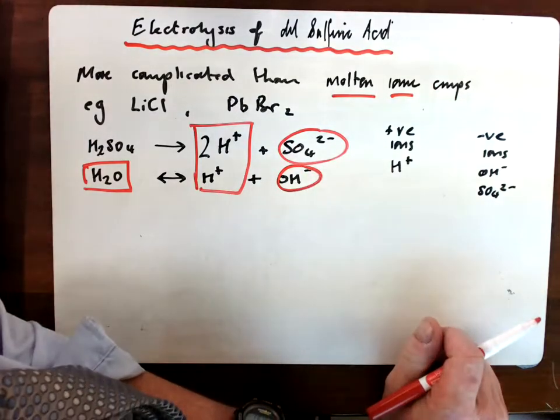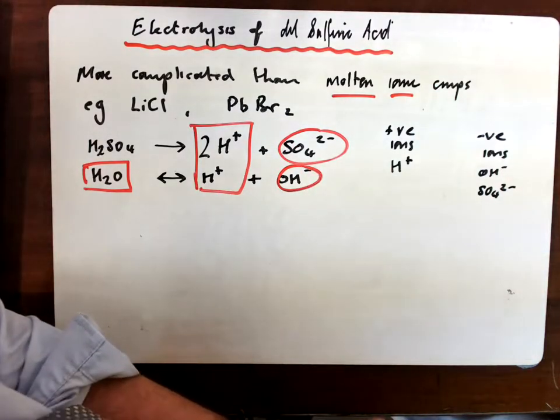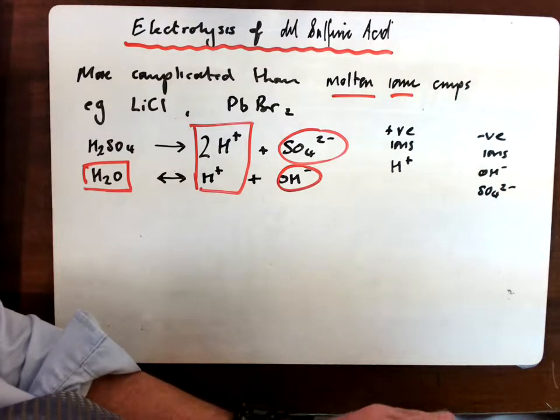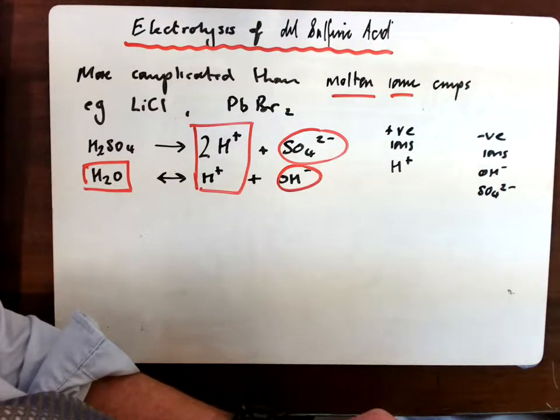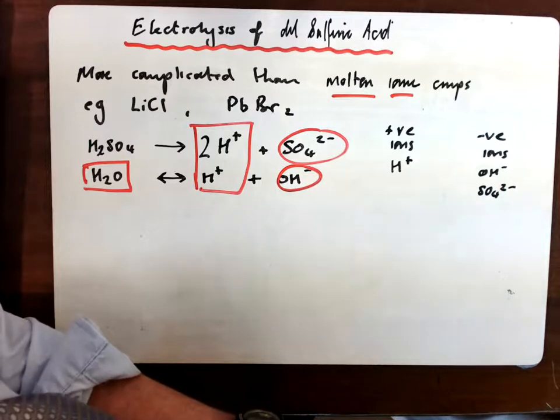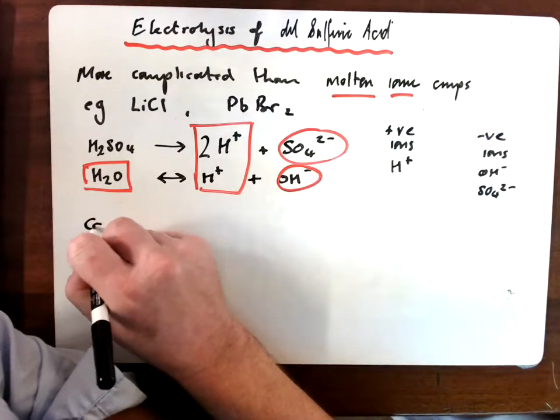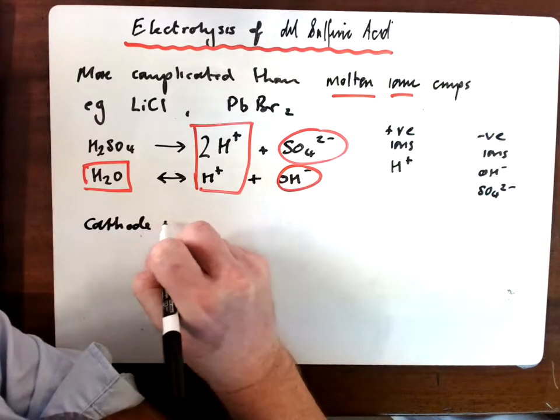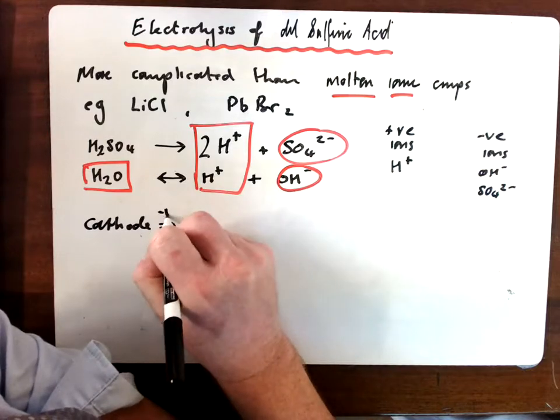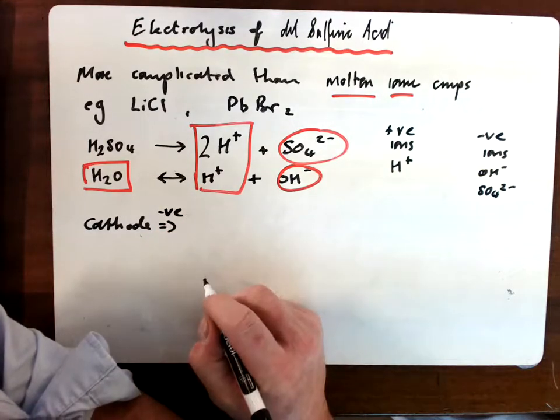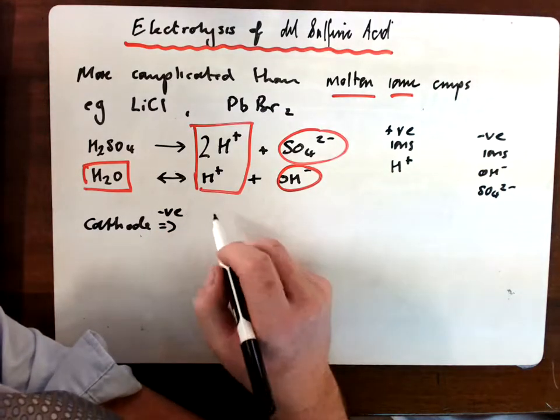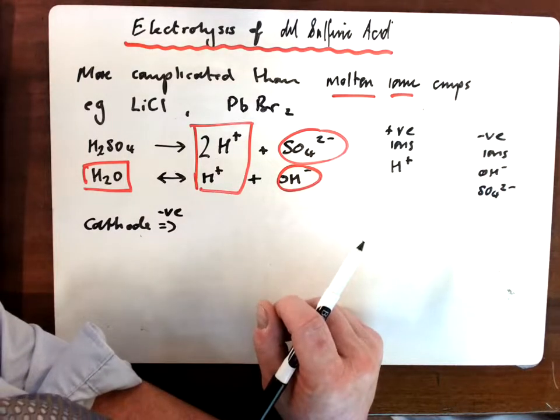If we look at the cathode here, the cathode is the negative electrode and will attract, of course, positive ions. The only positive ion in here are hydrogen ions, of course.